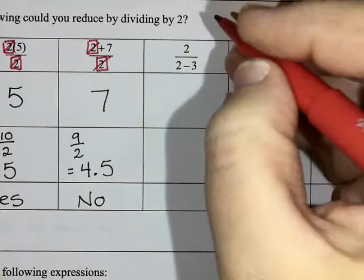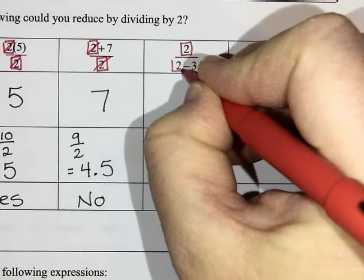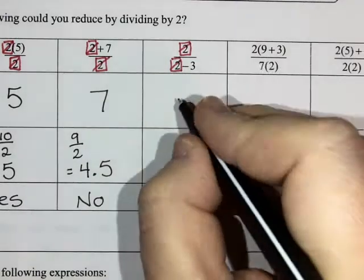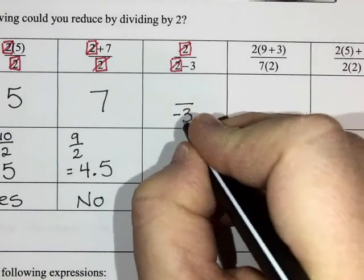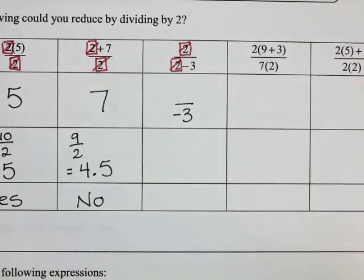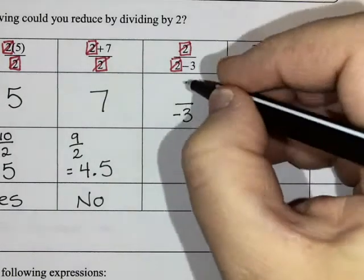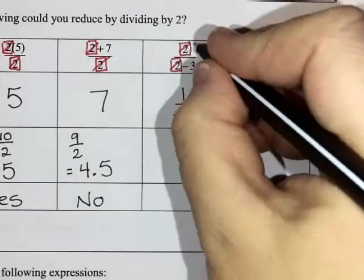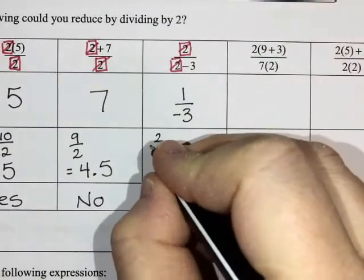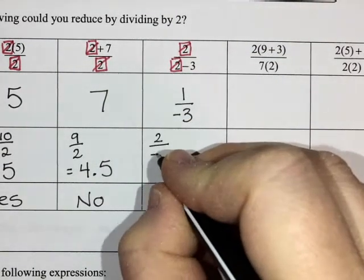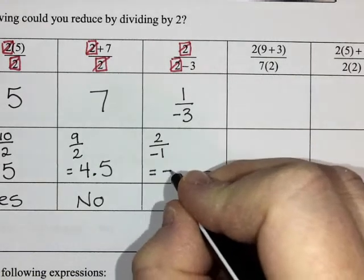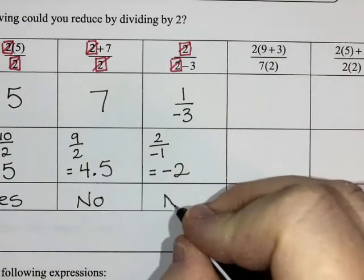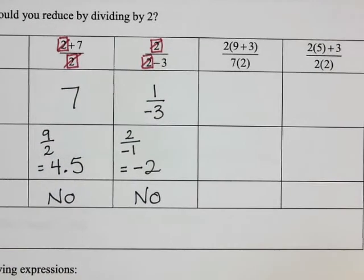Let's try the next one. If I have two over two minus three, and I cancel out or divide out the twos, I'd have a minus three on the bottom and maybe a one on the top, since two divided by two is one. Let's actually try it: two on the top, two take away three is negative one, and two divided by negative one is negative two. So did that work? No.